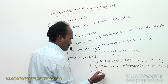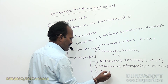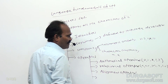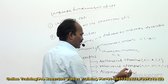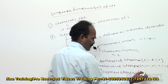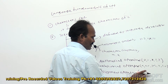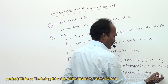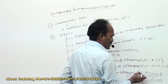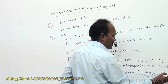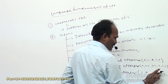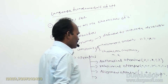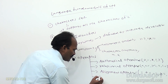Next are assignment operators, which are used for assigning a value into a variable. The assignment operators include: equal to (simple assignment), addition assignment, subtraction assignment, multiplication assignment, division assignment, and modulo assignment.